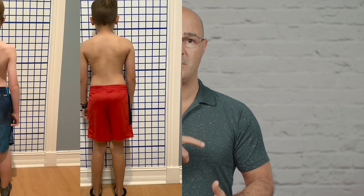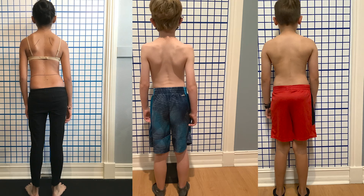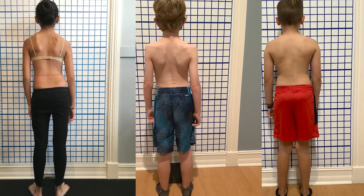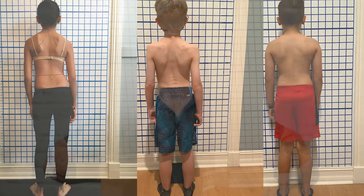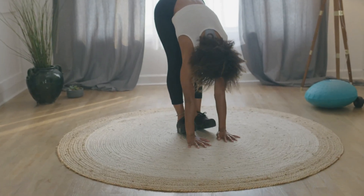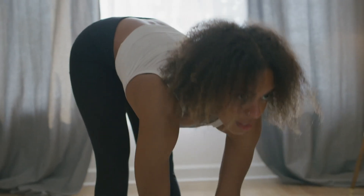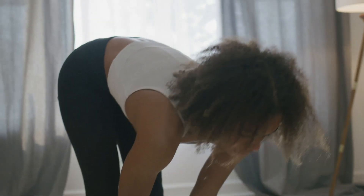The reason thoracic scoliosis is the most commonly diagnosed is because it's the easiest to spot from the symptoms. The most common symptom is rib changes. We can see these rib changes when a patient bends forward in the Adams Forward Bending Test — a thoracic scoliosis creates rib unleveling, where one side of the ribs goes up and the other goes down. This is very easy to notice, leading the doctor to send the patient for an X-ray confirming thoracic scoliosis.